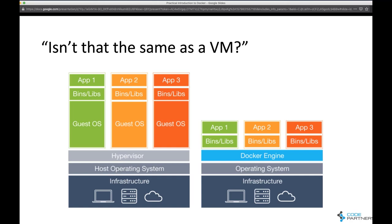Docker containers are the picture on the right-hand side. The key difference is that we're not installing a full operating system inside our container. The container contains just the app binaries, libraries, and configuration files. The operating system — most importantly the kernel — is leveraged from the host. In this case, I'm running Docker on Mac OS, so it's leveraging things from Mac OS. If you're running Docker on Windows, you're leveraging the underlying Windows host kernel.